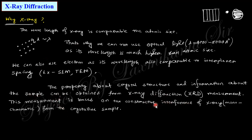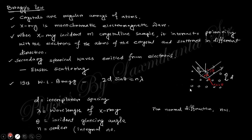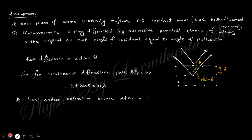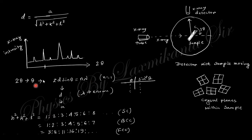X-ray produces constructive interference. These are the crystal planes, and the X-ray is reflected like that. There is a path difference, and due to this path difference they make an interference pattern. This angle is theta, and the path difference is D sin θ for each ray, giving a total path difference of 2D sin θ between two X-rays. This is constructive when it equals Nλ, where λ is the wavelength of the X-ray. This is Bragg's law: 2D sin θ = Nλ, from which you can obtain information about the material.